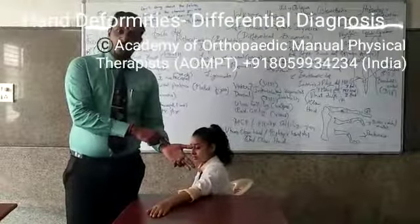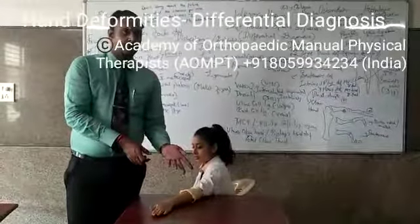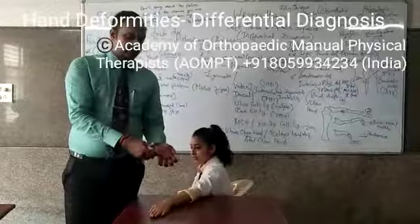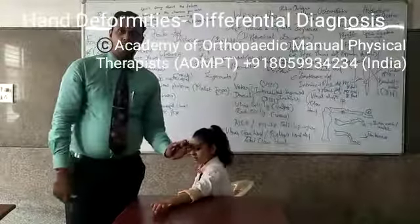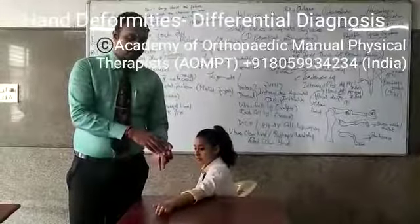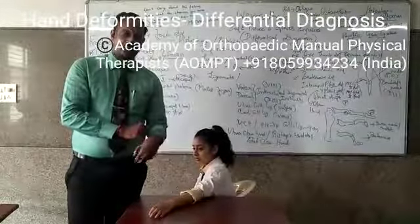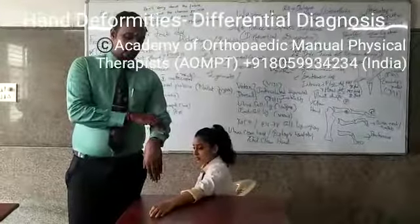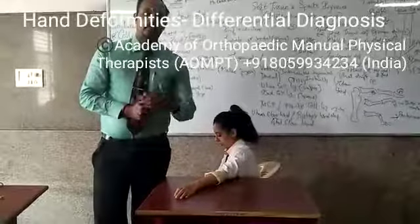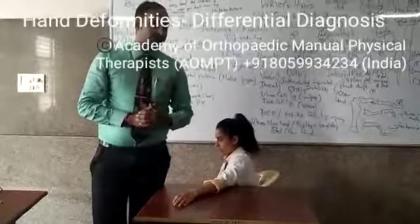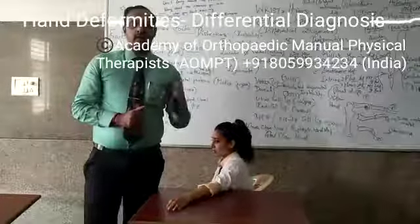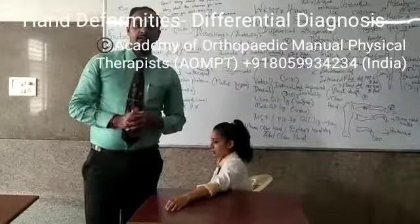Carpal tunnel syndrome usually leads to ape thumb initially, and over a period of time it will lead to median claw hand. These are all deformities, but sensory deficits will be in the distribution of the respective nerve. If there is wrist drop, posterior sensory deficits will be there. Deformities are caused because of prolonged motor deficit — the muscles being weak. So observation gives a clue for accurate differential diagnosis for wrist and hand.